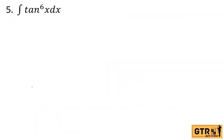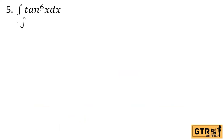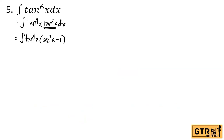Let's solve example number 5. First step: we break the integral by writing tangent to the 6th x as tangent to the 4th x times tangent squared x dx, subtracting 2 from the exponent. Then we apply the identity for tangent squared x: tangent squared x equals secant squared x minus 1.